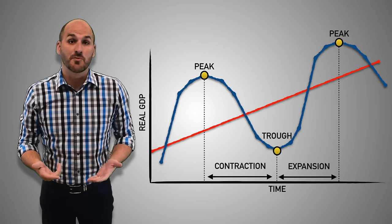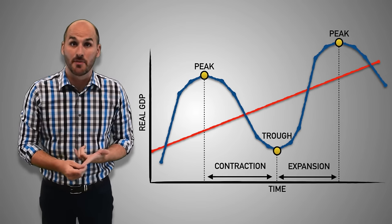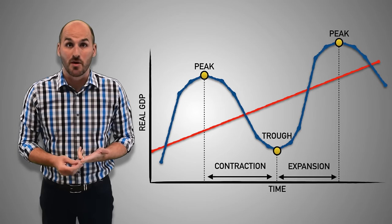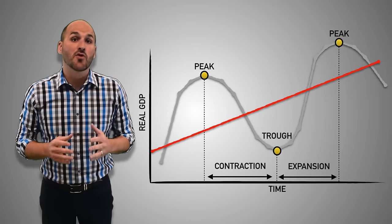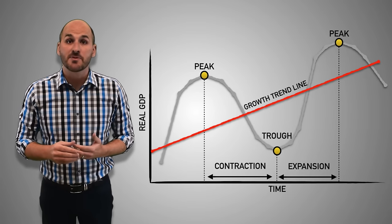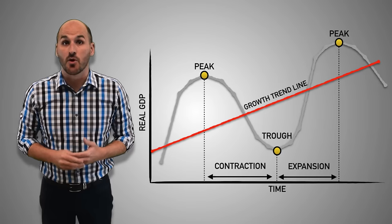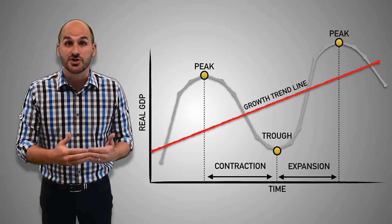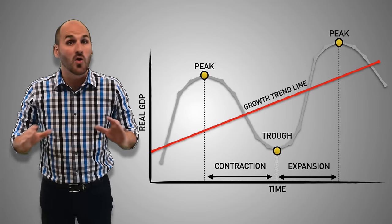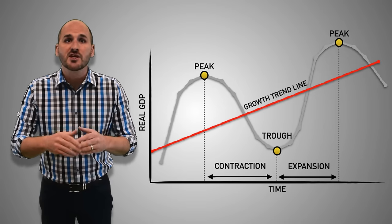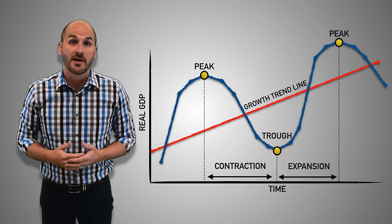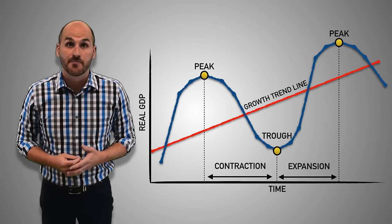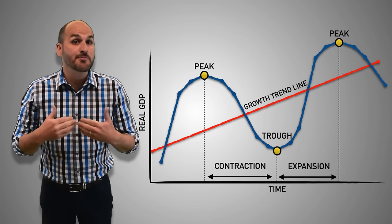So, how does this graph tell us how we're doing with the economic goals of promoting economic growth, preventing unemployment, and limiting inflation? This red line here? It's called the growth trend line. It's upward sloping because it represents the optimal rate of real GDP growth over time that the economy wants to achieve with the full employment of all available resources. It's used to compare where we are, wherever that might be on that blue real GDP line, compared to where we want to be.